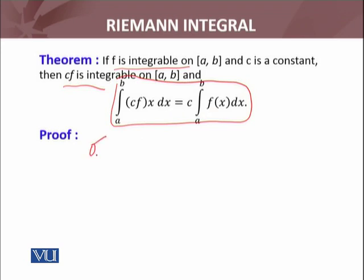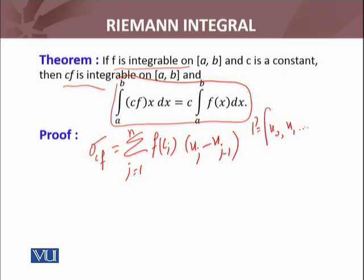The Riemann sum is by definition the summation from j equals 1 to n of f(c_j) times (x_j minus x_{j-1}), where P is the partition {x_0, x_1, ..., x_n}. This is the sum for the partition P.